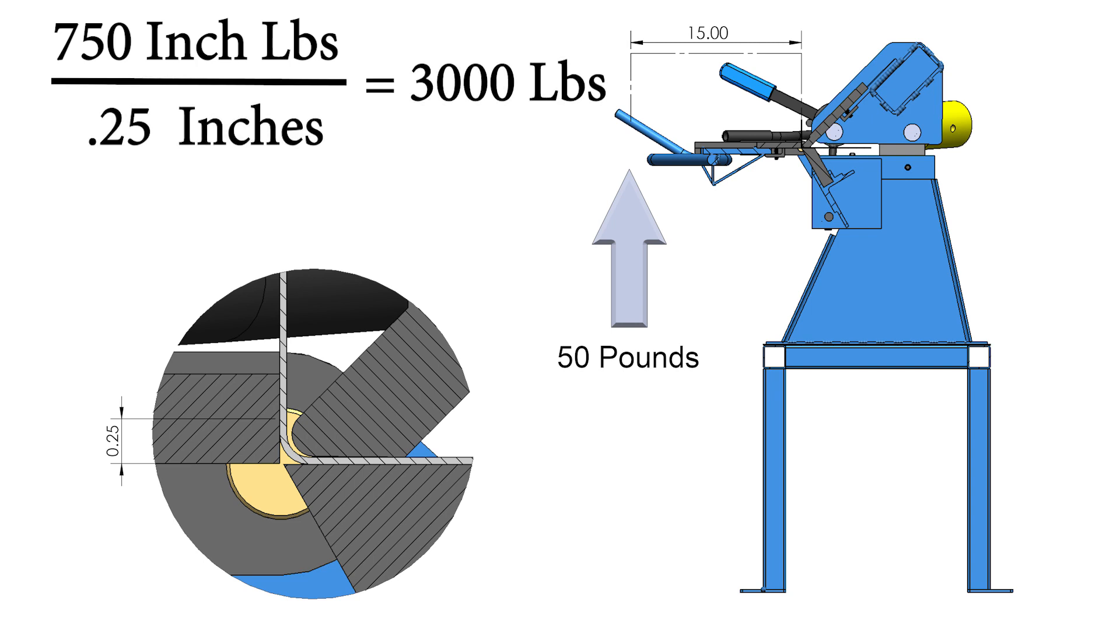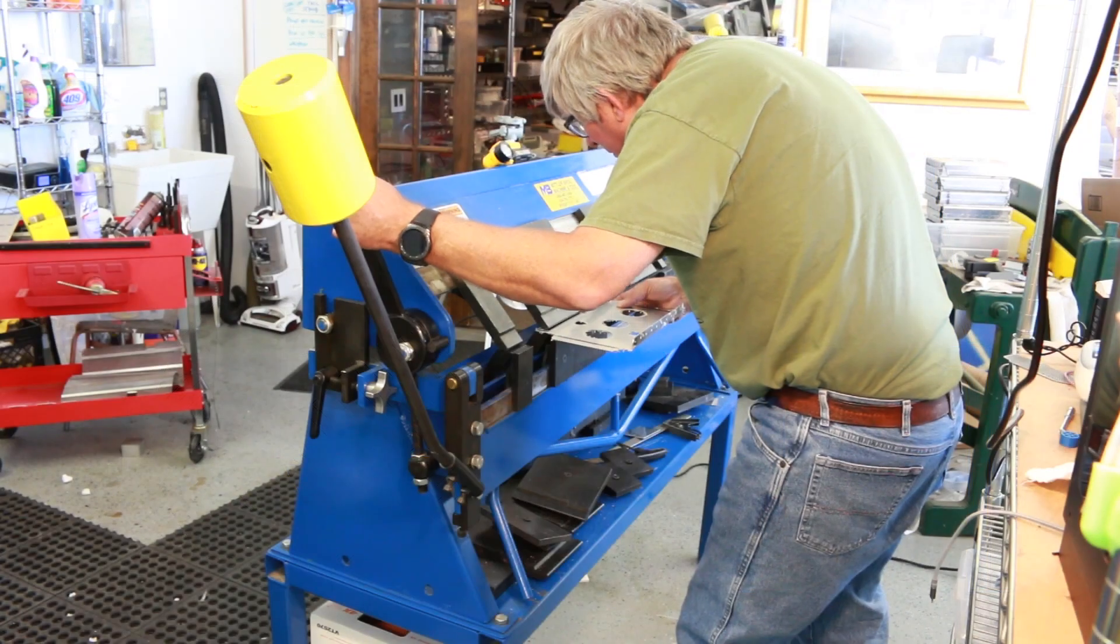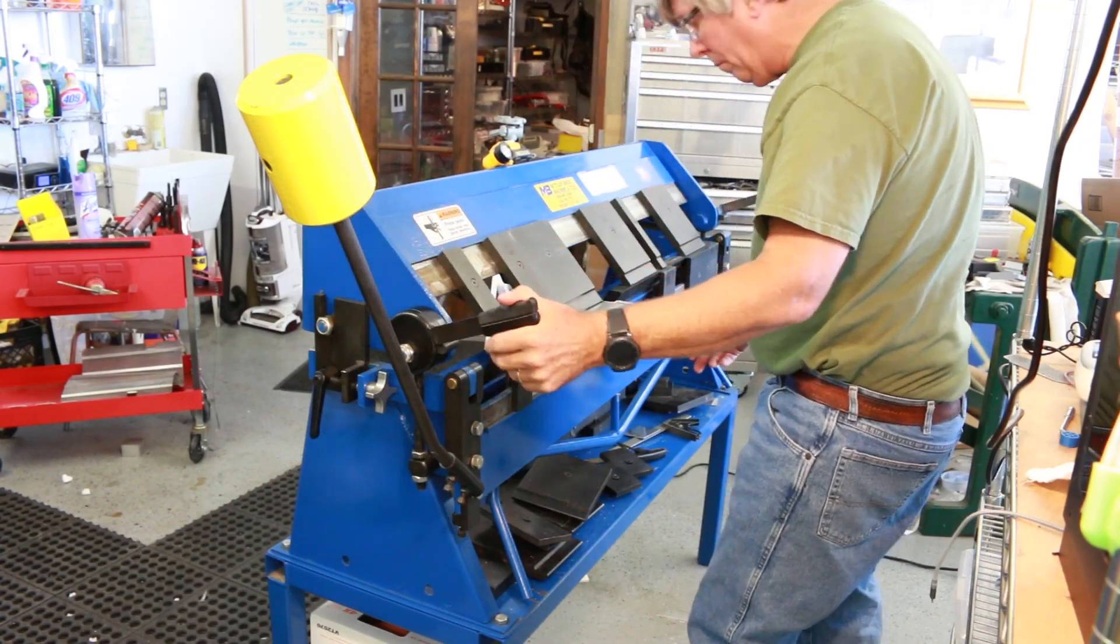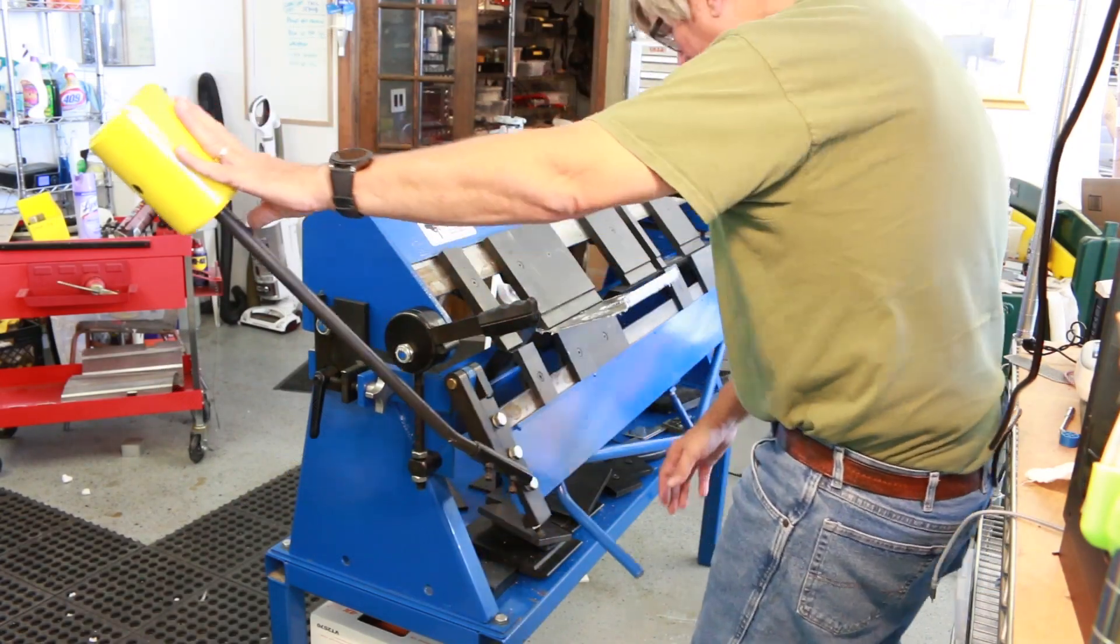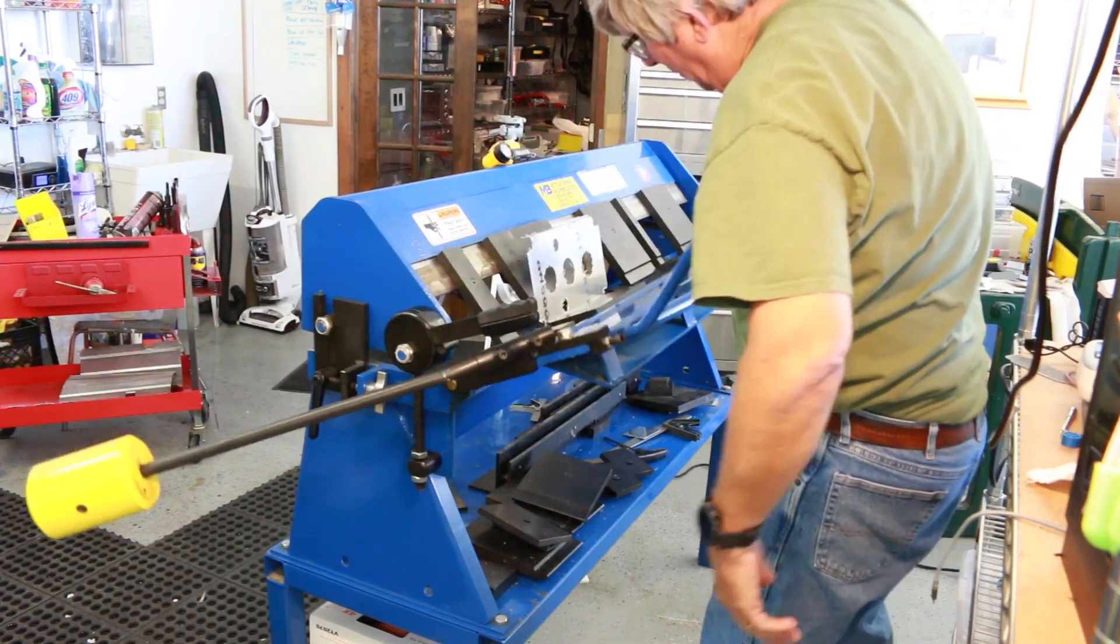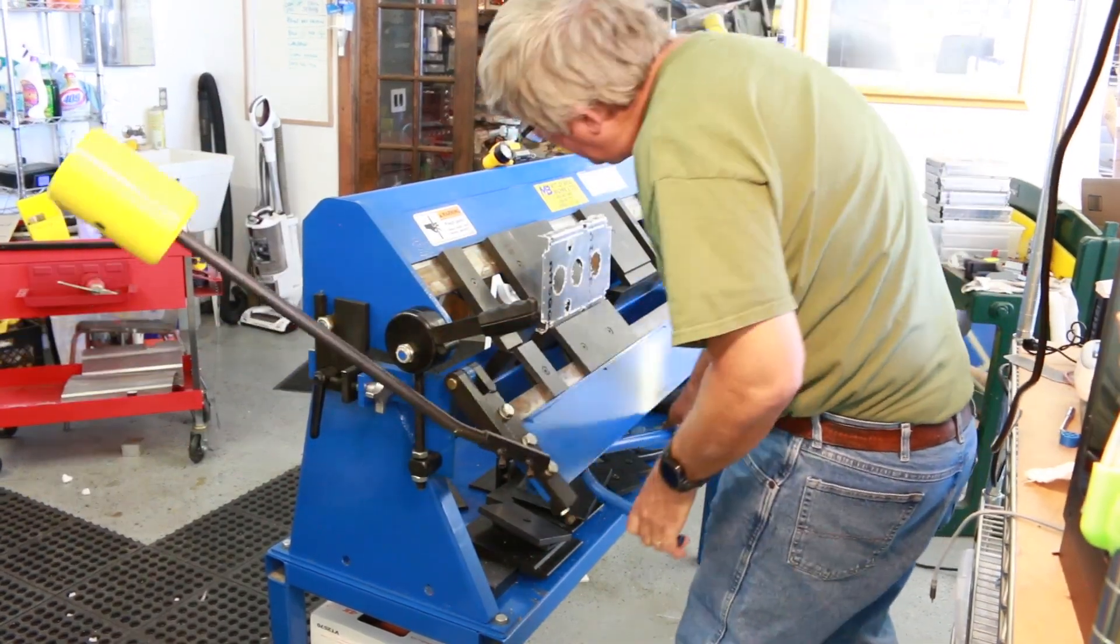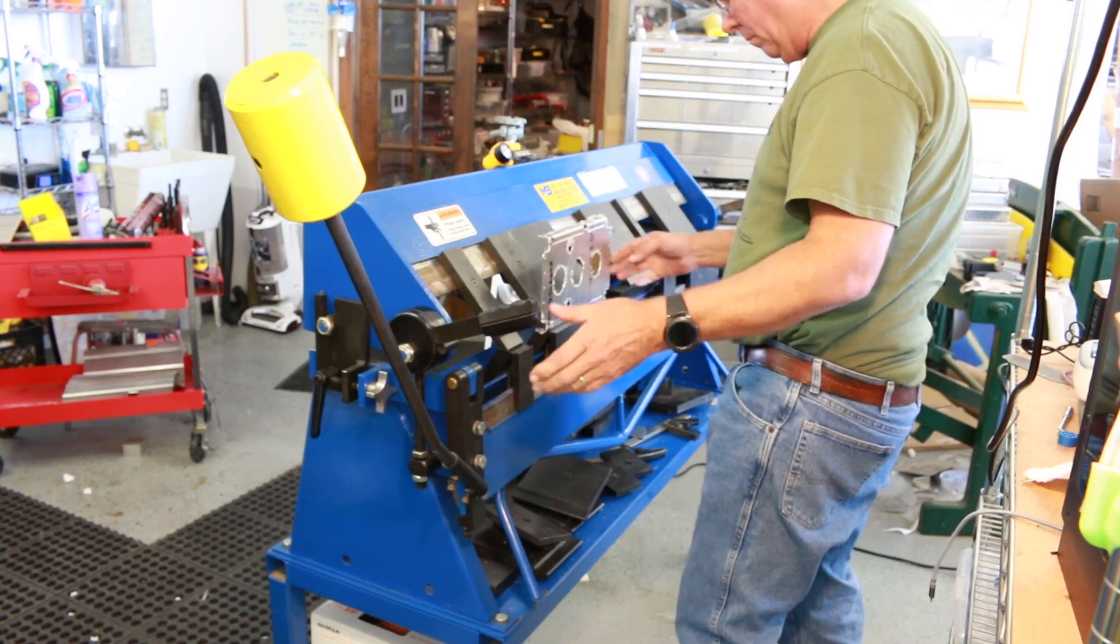This is applying 3,000 pounds of force to the sheet metal and the clamping finger. The whole purpose of the sheet metal brake is to take advantage of this leverage. With the counterbalance weight installed, the amount of force required to bend the piece of sheet metal is really quite small.